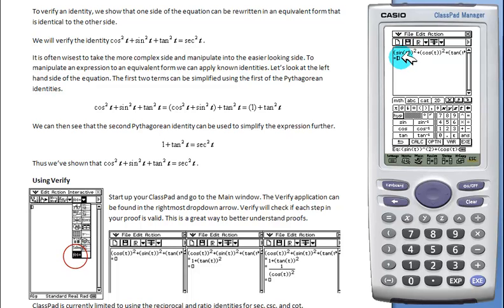Our next step in our proof would be to substitute the sine of t squared plus cosine of t squared with a one. One can be pushed from the calculator itself or from the soft keypad. We'll add tan t squared.